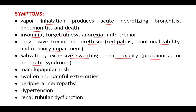The next symptom is maculopapular rash. Macula refers to flattened lesions and papule refers to raised lesions. So both types of lesions are seen on the skin — hence it is called maculopapular rash. This is a characteristic feature of mercury poisoning.